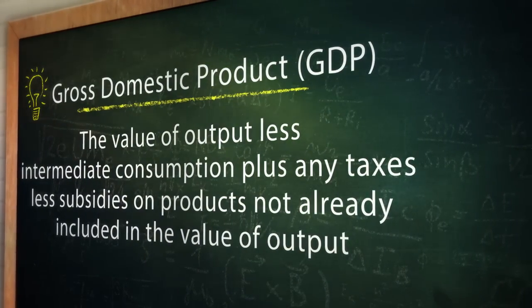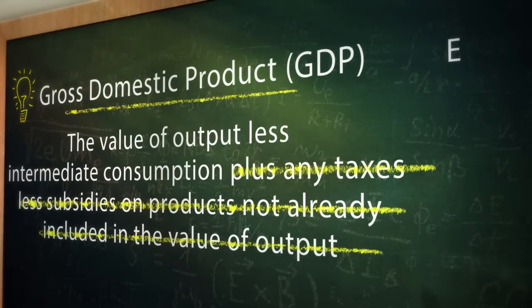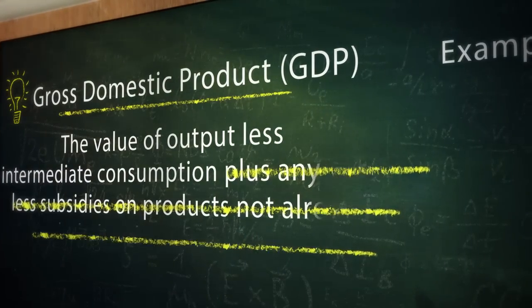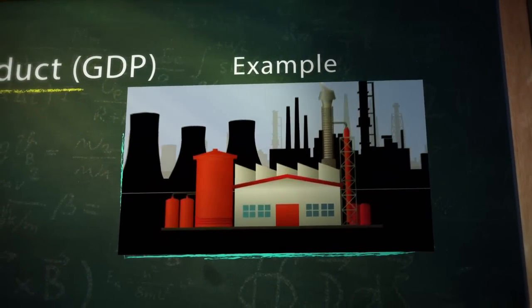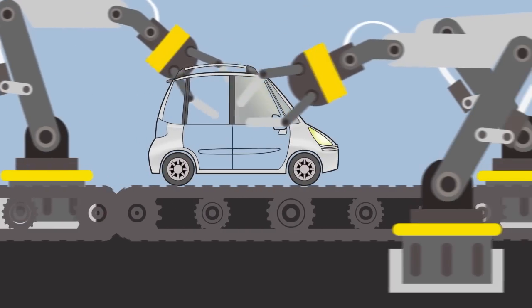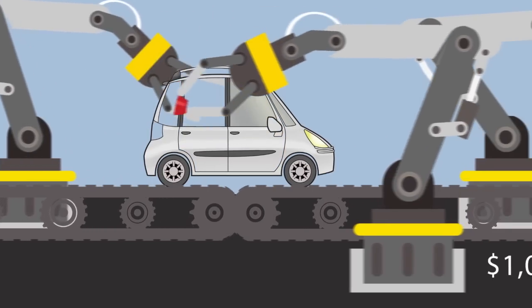For this example, let's also assume that the taxes less subsidies on products not already included in the value of output is equal to zero. Alright, let's say you have an automobile assembly plant. Every year the plant produces all sorts of cars. The total worth of all the cars produced annually in the factory is $1 million.